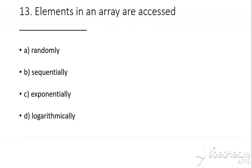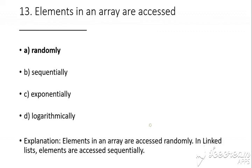Question number 13: Elements in an array are accessed — the answer is A, that is randomly. Explanation: elements in an array are accessed randomly, whereas in a linked list elements are accessed sequentially.